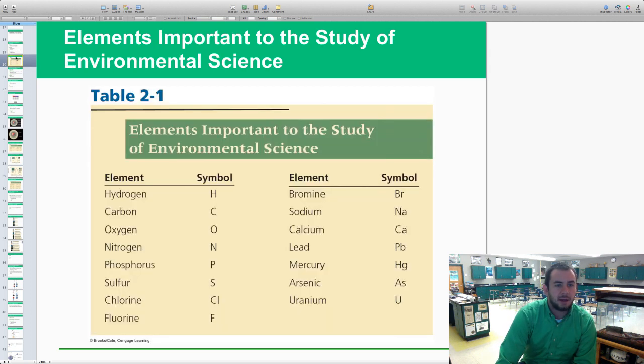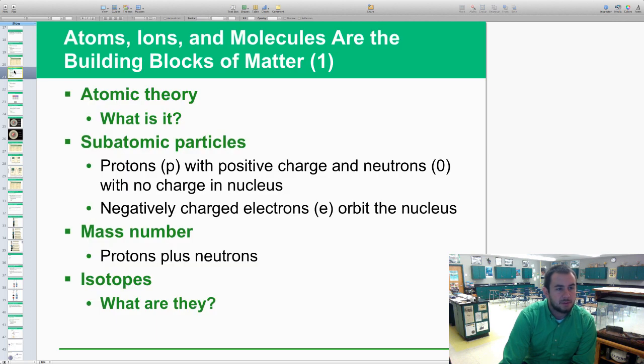Some of the elements that we study the most in environmental science are obviously hydrogen, carbon, oxygen, nitrogen, phosphorus, sulfur, chlorine, fluorine, bromine, sodium, calcium, lead, mercury, arsenic, and uranium. Those are our main types of elements that we look at and we'll talk about throughout the semester in AP environmental science.